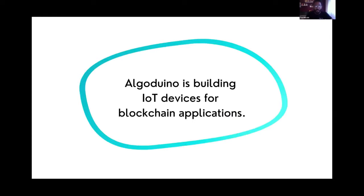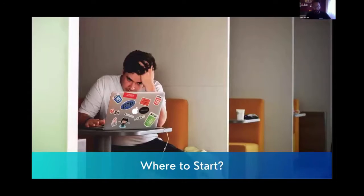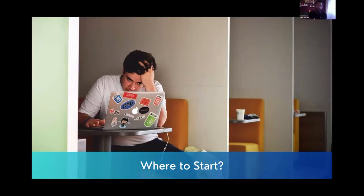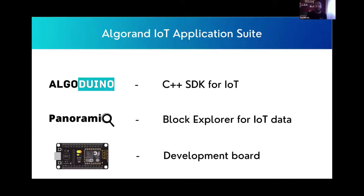Algoduino is building IoT devices for blockchain applications. IoT is one of many use cases of blockchain technology, but the thing is that it is difficult for developers to get started because the development tools are not yet available. This is why at Algoduino we are providing a set of tools to power developers. The first one is Algoduino, a C++ SDK for IoT development.